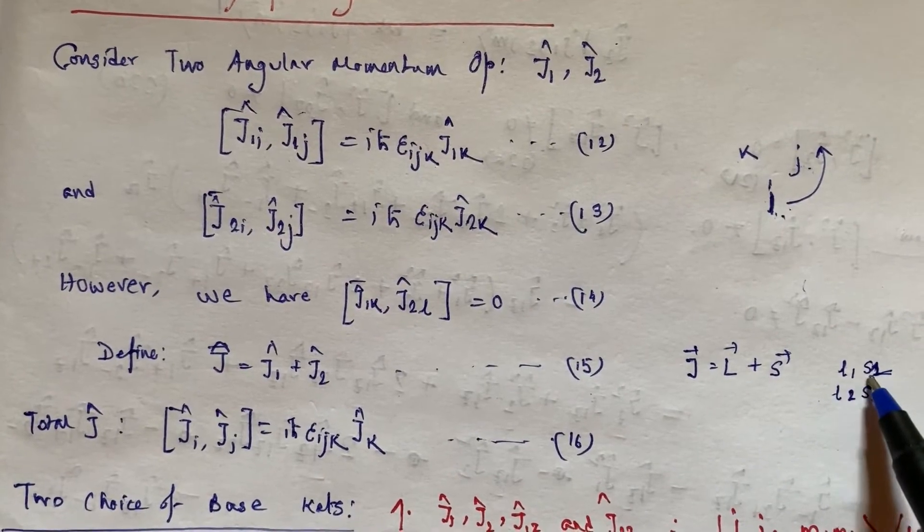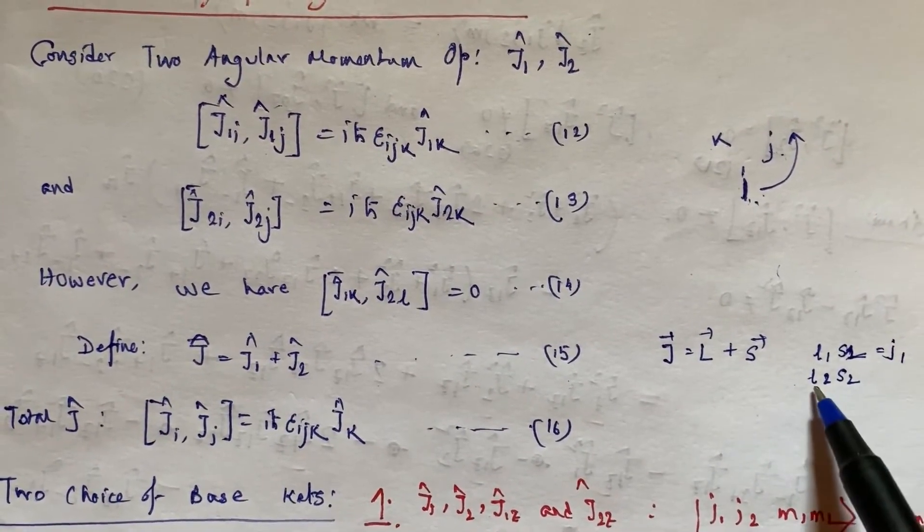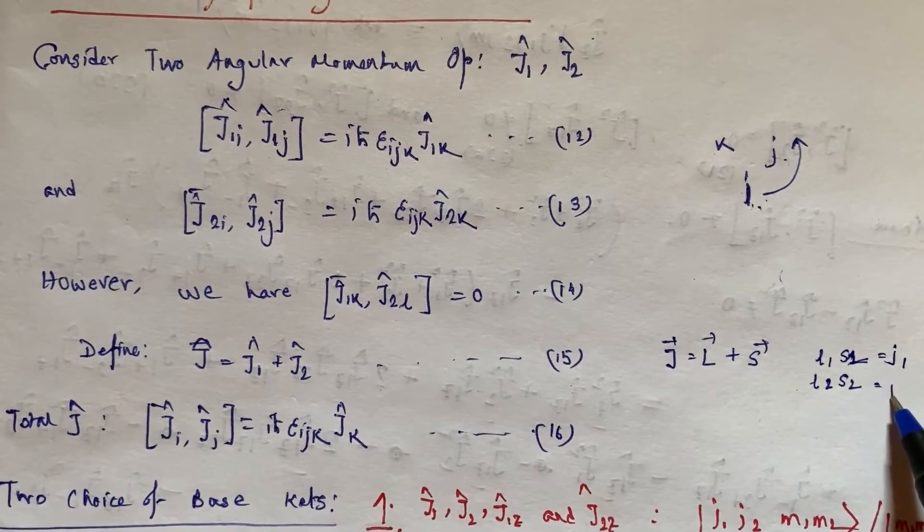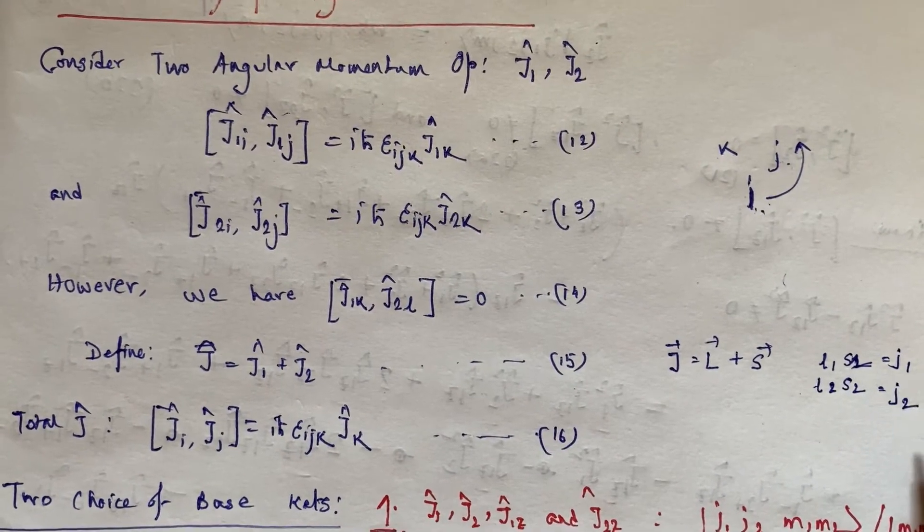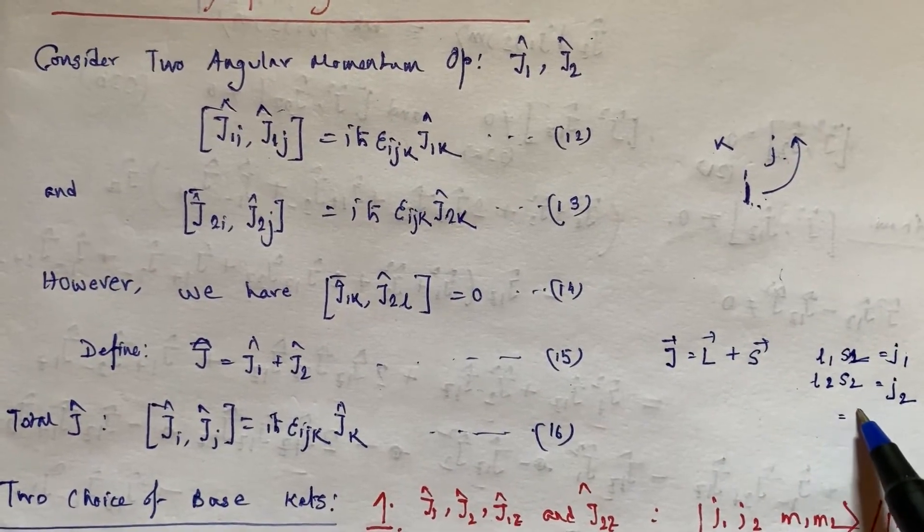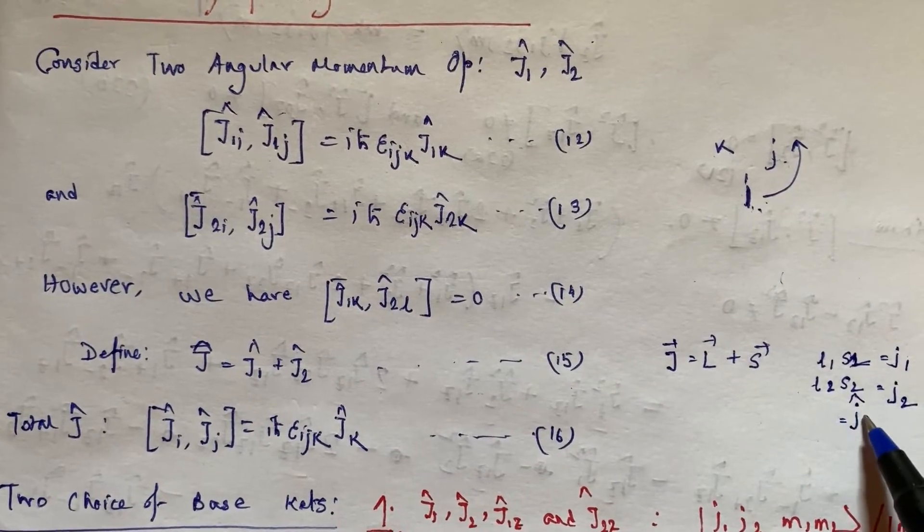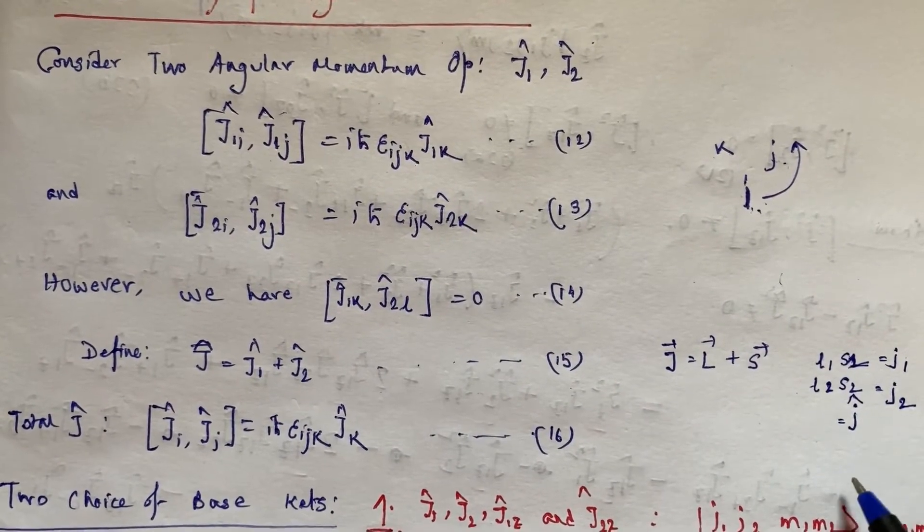This L₁ plus S₁ will give us small j₁, L₂ plus S₂ will give us small j₂. This j₁ plus j₂ will give us total J, that is the total spin value of the two electron system.